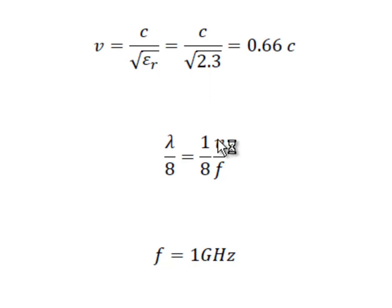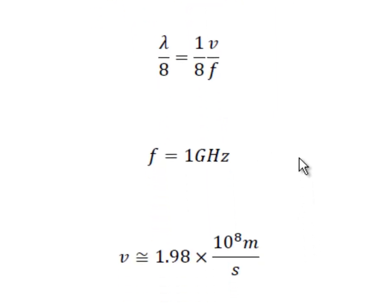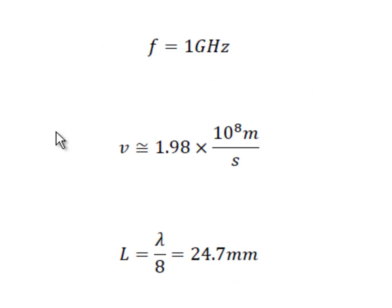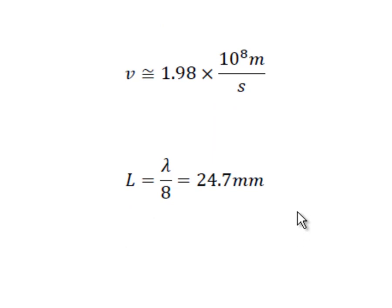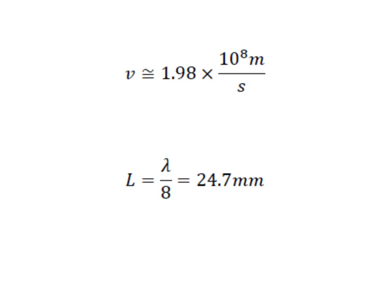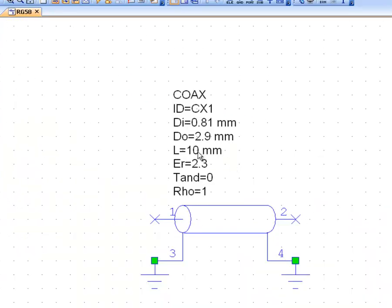Lambda over 8 equals one eighth of V over F. The frequency we'll simulate at is 1 GHz, though you could pick other frequencies — it's just for simplicity. The velocity of the signal in the cable will be 1.98 × 10⁸ meters per second, dividing the speed of light by the square root of 2.3. The length of the line therefore turns out to be lambda over 8, equal to 24.7 millimeters. We go back to our schematic and enter 24.7 as the length of our line.